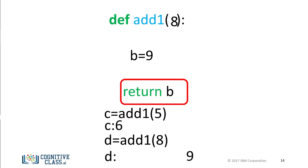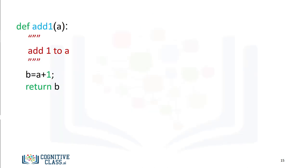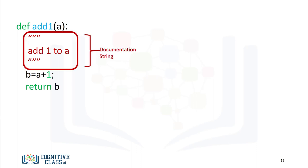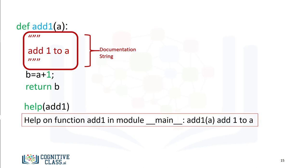Let's try and make this function more complex. It's customary to document the function on the first few lines. This tells anyone who uses the function what it does. This documentation is surrounded in triple quotes. You can use the help command on the function to display the documentation, which will print out the function name and the documentation.